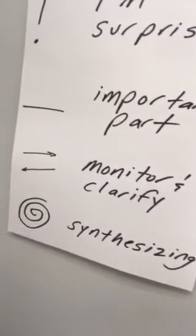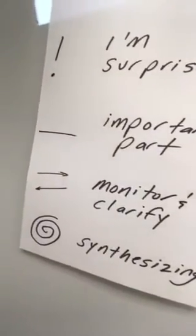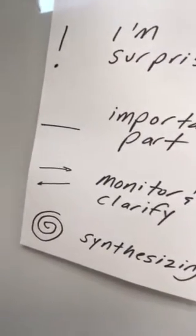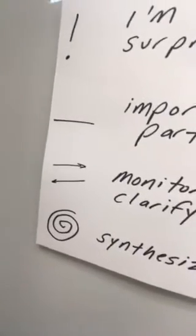And then finally, I teach my students to use a spiral which shows how to synthesize information or take ideas from multiple places in the text and put them all together to understand new meanings in text.